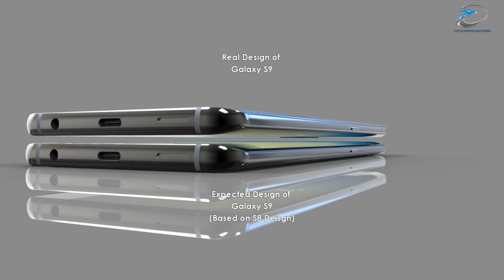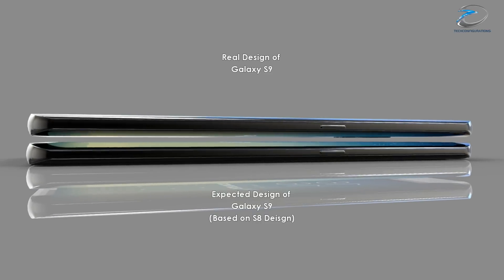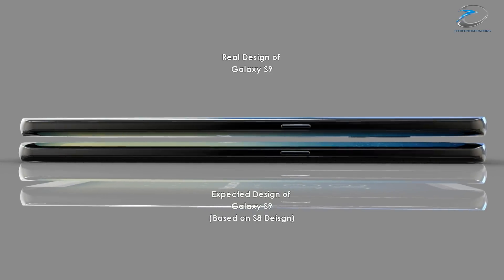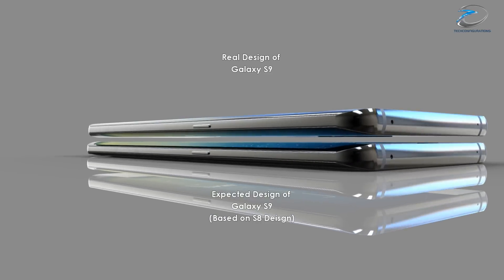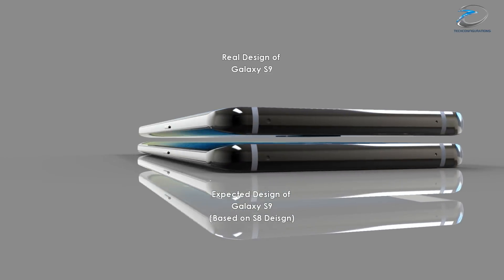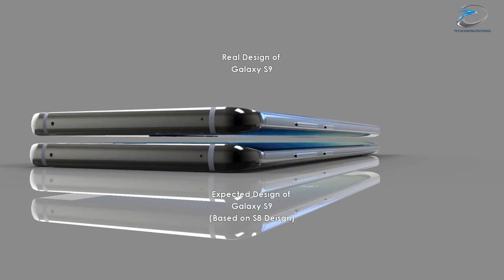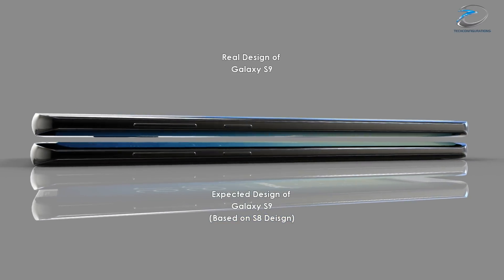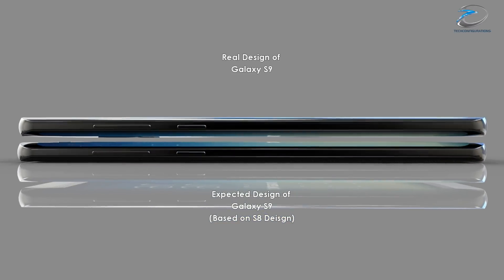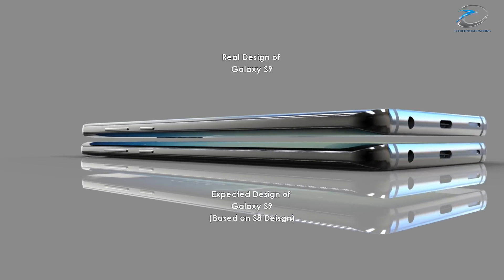Here on this 3D render you can clearly see that the sloping curves of the display edges on the Galaxy S9 are much more gradual than on the S8. It starts sooner but also merges sooner with the bezels, making it thicker than on the Galaxy S8.